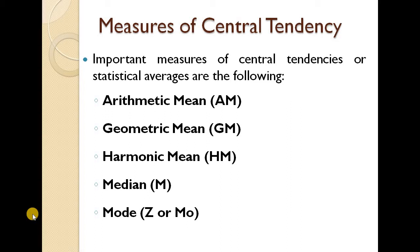Arithmetic Mean, Geometric Mean, Harmonic Mean, Median, and Mode. That is the measure of central tendencies. Variations is the next chapter.